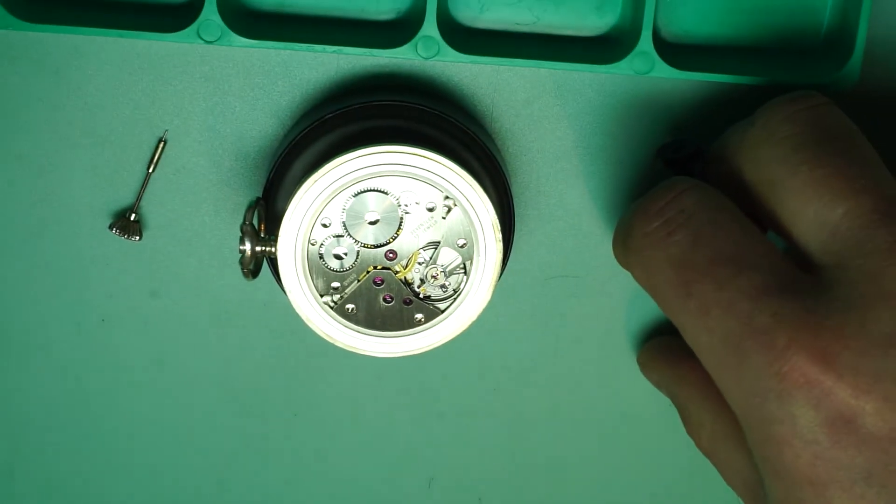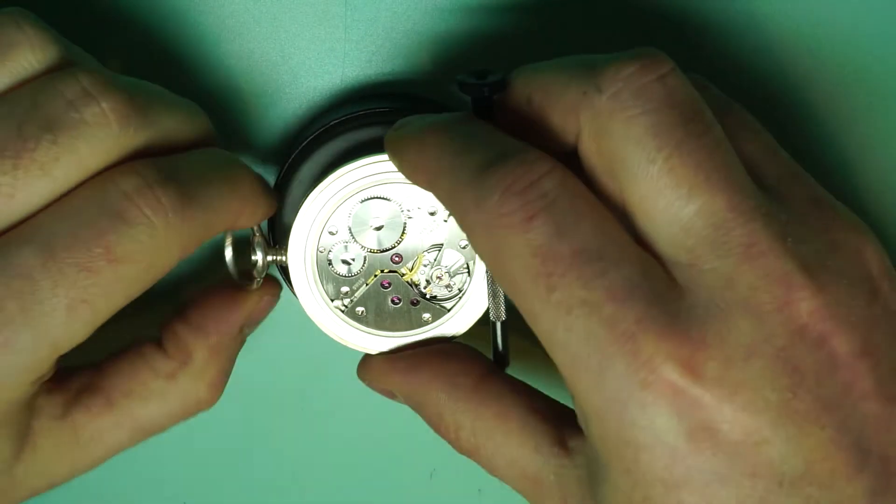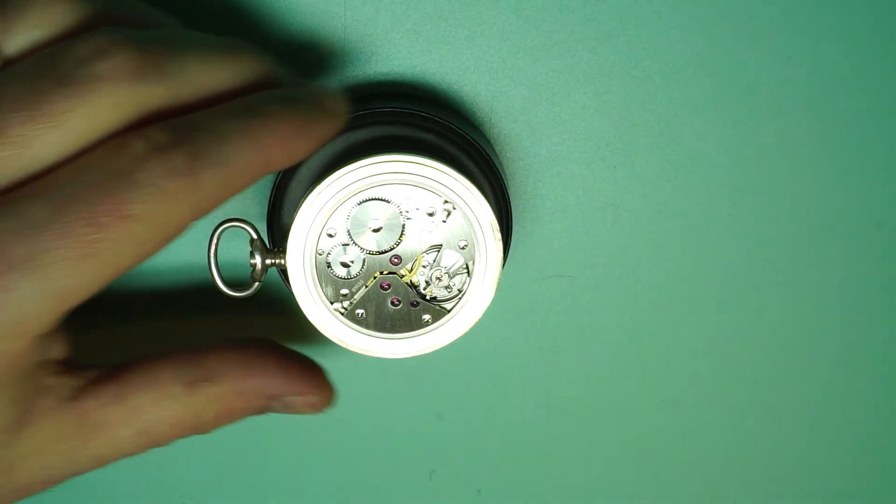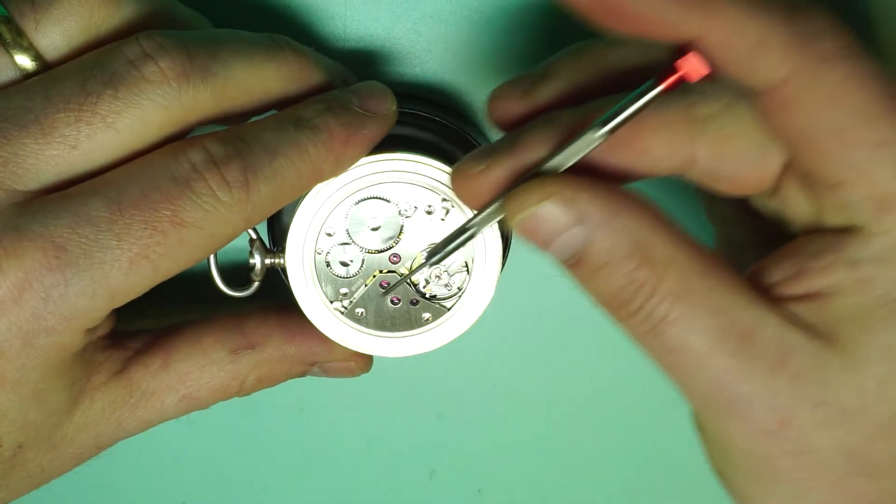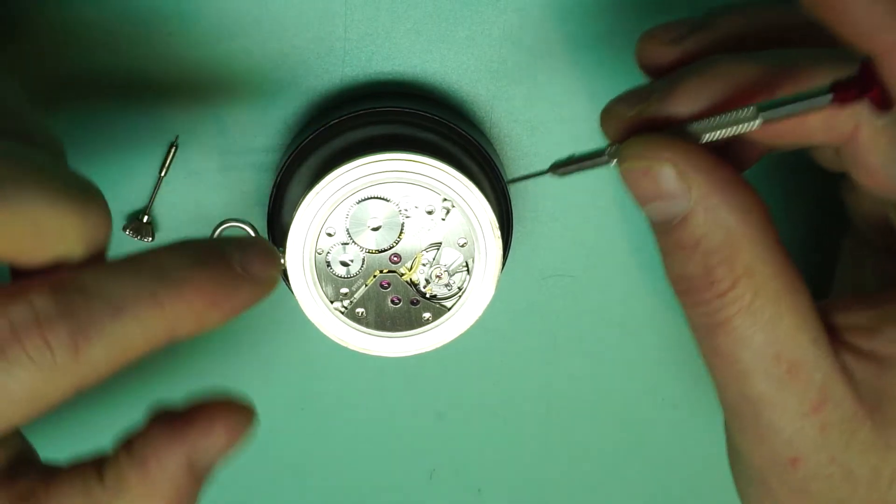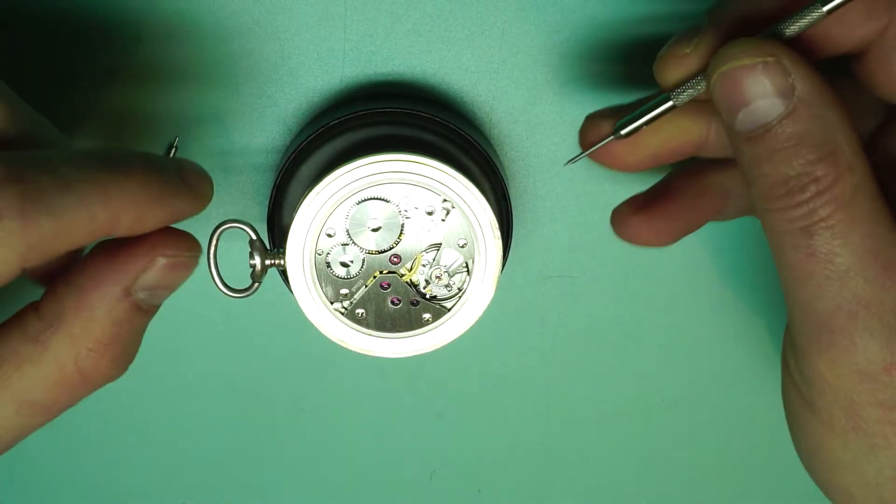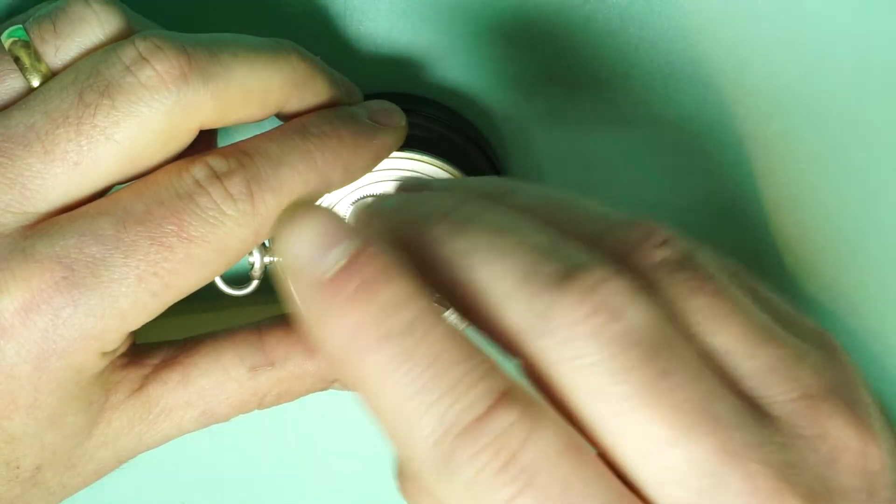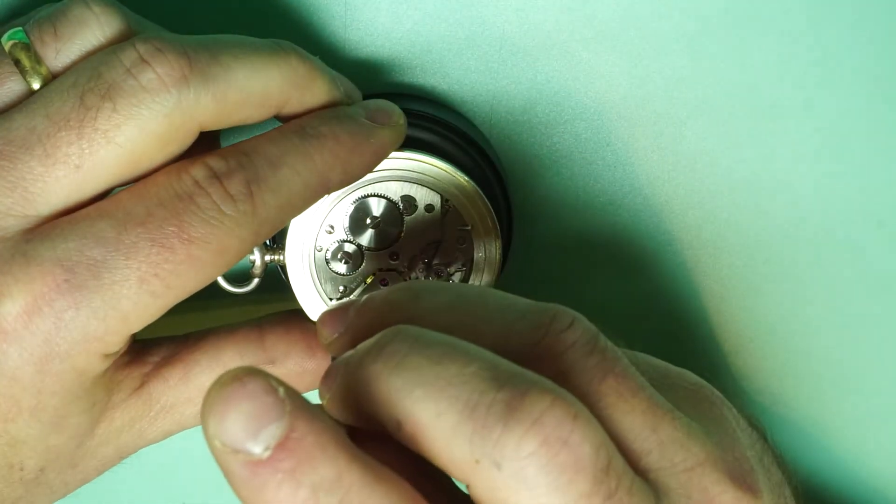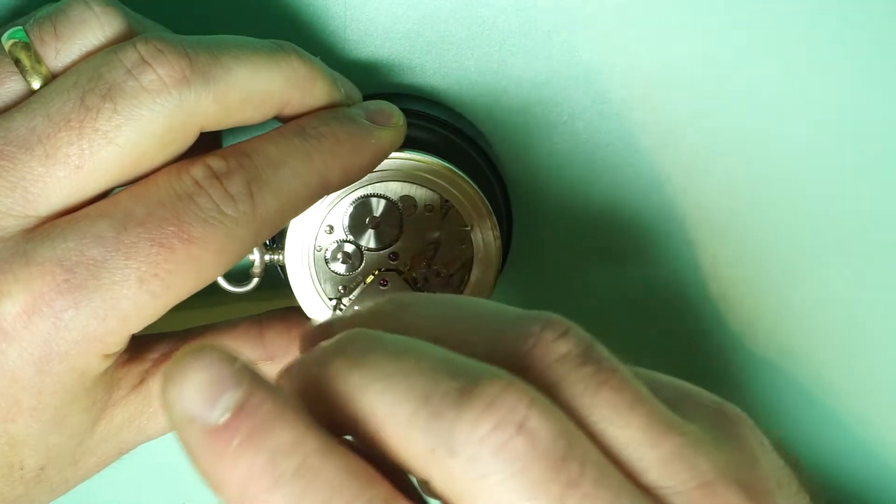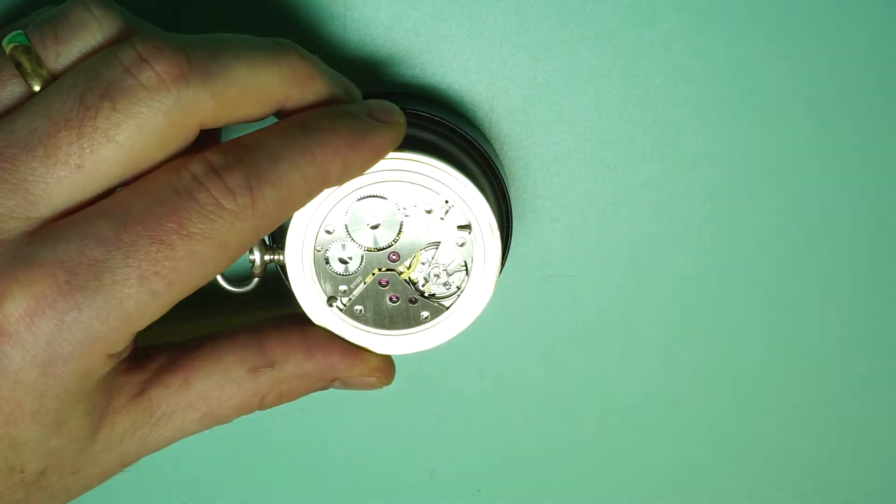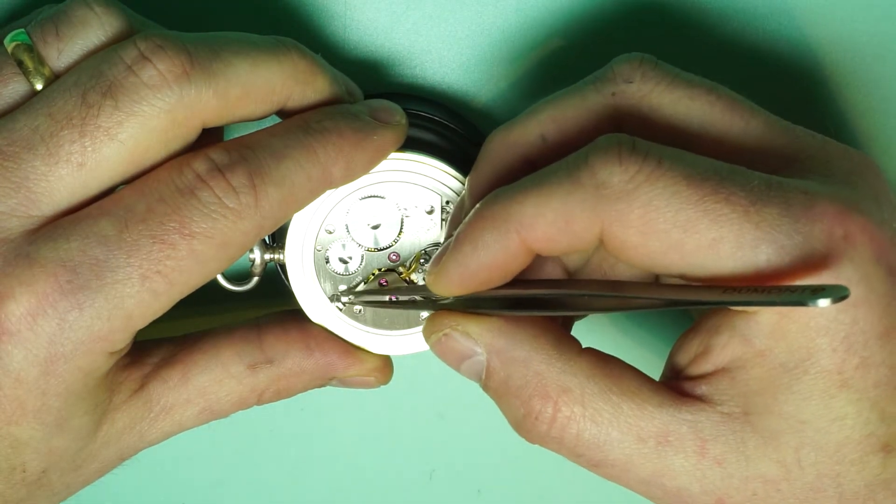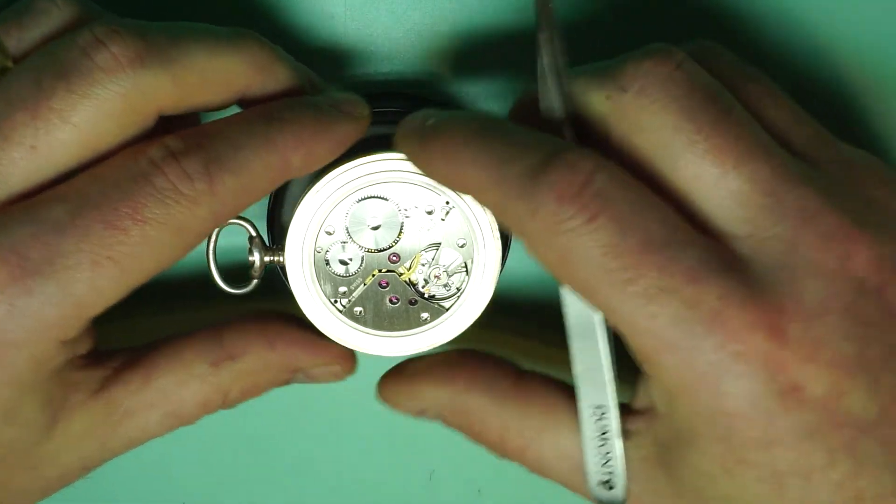I'm going to zoom slightly outwards. So now that the stem is out we can release the movement screws that are retaining the movement within the case. So there's one here and there's one here on the other side. On other movements it may vary, there may be more case screws and maybe case clamps involved but it's the same kind of principle. So you take the case screws and you put them just to one side in your tray keeping them nice and safe.